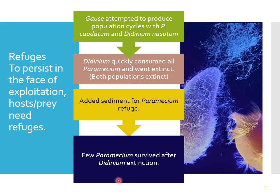Gauss then put sediment — gravel — on the bottom, giving the paramecium a place to escape. The Didinium would eat most of the paramecium, then have nothing left to eat and die. The few remaining paramecium would start to come back and their populations could grow again. To get oscillations, Gauss had to take some Didinium from a separate culture and put a few back in — simulating immigration. With that immigration, the paramecium would drop again, the Didinium would die out, and then he'd have to bring some back, requiring periodic migrations.